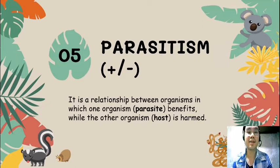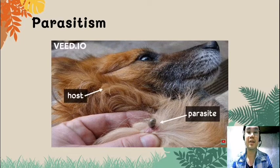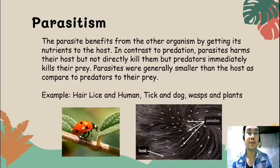The last type of ecological relationship is parasitism. It is a relationship between organisms in which one organism — the parasite — benefits, while the other organism — the host — is harmed but not directly killed. In this example, we have a picture of a dog that has a tick attached to its skin. The tick is the parasite, and the dog is the host. The parasite benefits by getting nutrients from the host. In contrast to predation, parasites harm their host but do not directly kill them, while predators in predation immediately kill their prey.